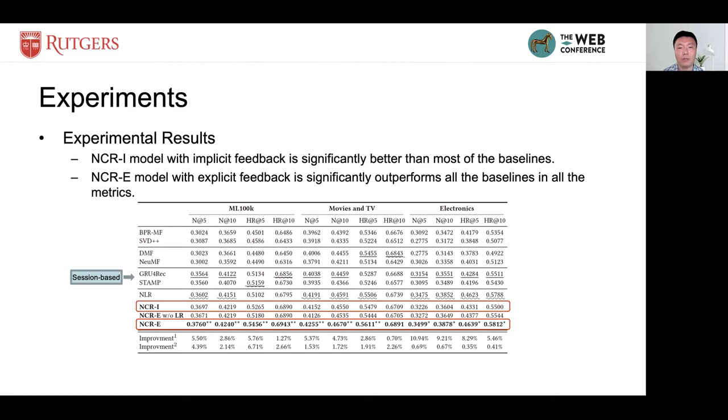We first compare with the matching-based models. We see that among the first six baselines, GRU4REC and STAMP achieve the best performance in most cases, since the two models use implicit feedback for modeling training. For fairness in comparison, we use our implicit model, NCRI, to compare with the two baselines.